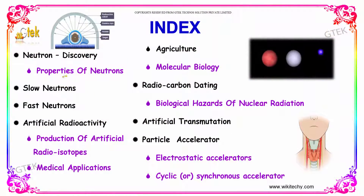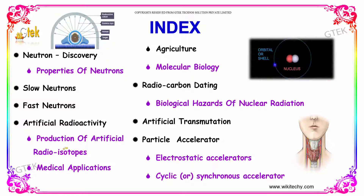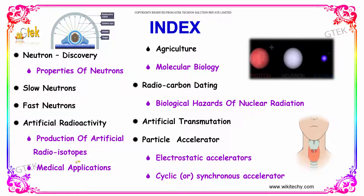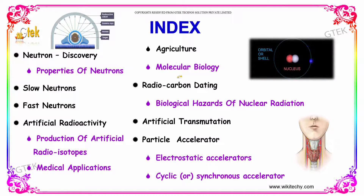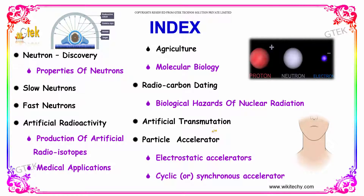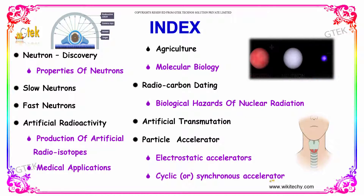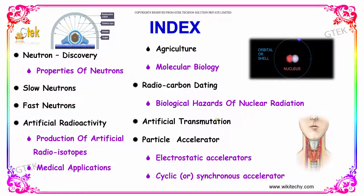Here is the index we are going to look into: the neutron discovery and its properties, slow neutrons, fast neutrons, and artificial radioactivity. Under that, we are going to talk about the production of artificial radioisotopes and medical applications, agriculture, molecular biology, and how radioactivity is used. Finally, radiocarbon dating, the biological hazards of nuclear radiation, and artificial transmutations. What is a particle accelerator, about electrostatic accelerators, and also about cyclic accelerators — these are the areas we are going to look into.